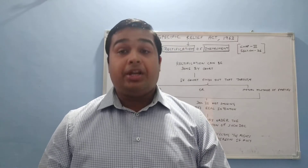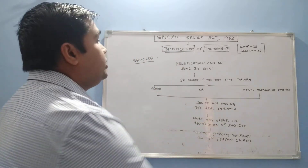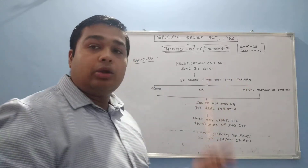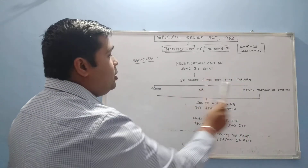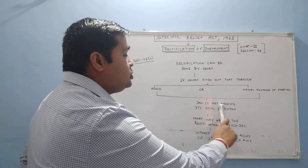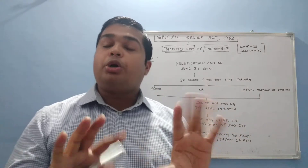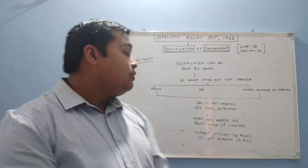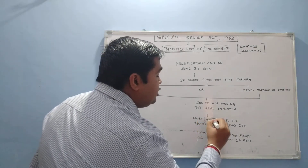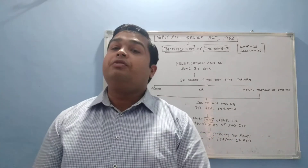We will see when the rectification of an instrument can be demanded by parties, and when rectification can be done by the court. If the court finds out that through fraud or mutual mistake of parties, the document is not showing the real intention of the parties — that is, the document does not reflect what the parties actually intended — then the court may order the rectification of such document. Note: the word used is 'may,' meaning it is discretionary.